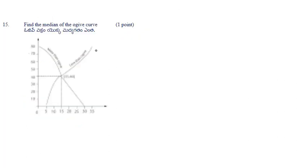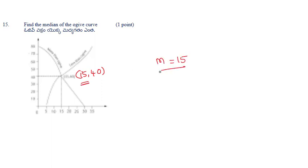The last problem: obtain the median from the graph. The less-than ogive and greater-than ogive both intersect at the point (15, 40). The x-coordinate is 15, so the median equals 15.